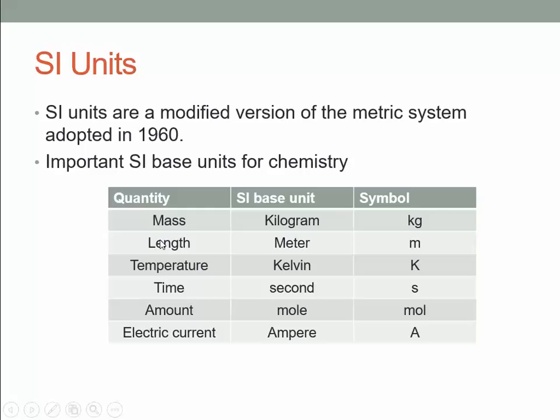The SI units are basically a modified version of the metric system, adopted in 1960. The metric system is a vastly superior system of measurement to the one used in America. It's well thought out and put together for ease of use — much easier than our system, even if you're not used to it.